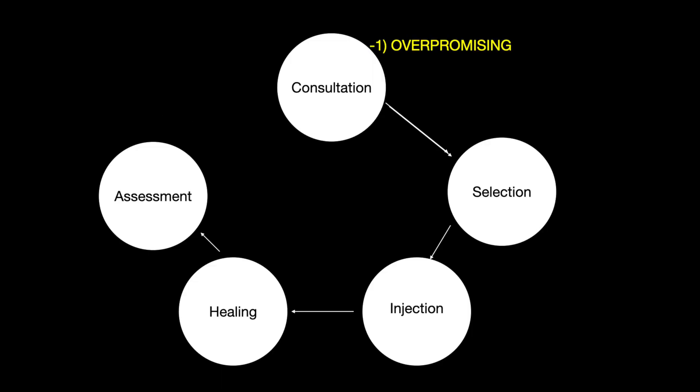Mistake number one is overpromising. Overpromising that the veins will go completely leaving blemish-free legs. During the consultation, explain that microsclerotherapy is not perfect. No treatment ever is. However, 80-90% of people are very pleased with the outcome and are satisfied with the final results of microsclerotherapy. However, up to 15% may be disappointed because the results do not meet their expectations of improvement.